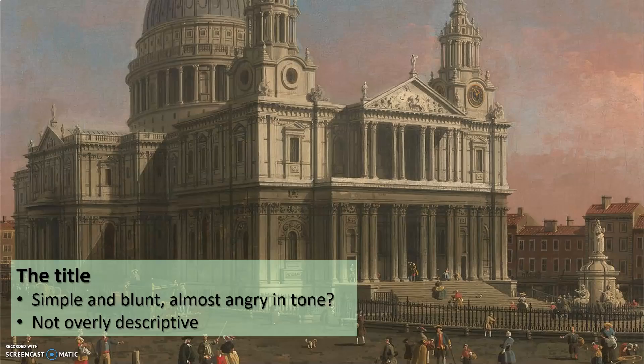Think about the title: London. In the background there is St. Paul's Cathedral, which still stands today. The title is very simple and blunt. Does it almost sound angry in tone? Just 'London' — the corruption of London comes through in that. It's not overly descriptive and doesn't give us any other clues, but draws us in to read the rest of the poem. Always focus on titles, as they can give clues. In this case, I'd call it a very descriptive title.